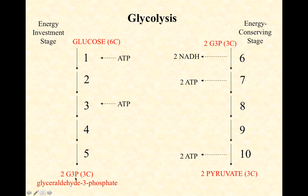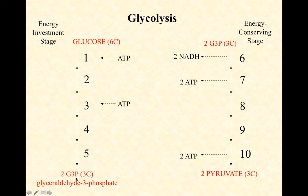Through two phosphorylations and three other steps, we're going to dephosphorylate and split glucose into two molecules called glyceraldehyde 3-phosphate — each three carbons. So from our six-carbon glucose we get two phosphorylated three-carbon molecules: two G3Ps, glyceraldehyde 3-phosphate.